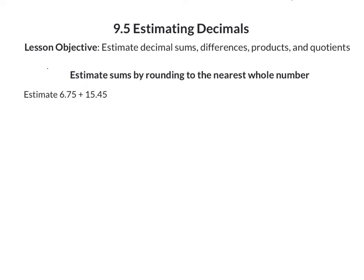In this video we're going to be looking at 9.5 estimating decimals. The lesson objective is to learn how to estimate decimal sums, differences, products, and quotients. Remember, when you see the word estimate, that means we're going to have to round. We talked about rounding decimals back in chapter 8, so we're going to apply those skills in this lesson.